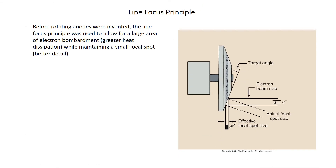The line focus principle is based on the fact that you can have a large actual focal spot, and because of the angle of the anode's face, you can have a smaller effective focal spot. The advantage is that the larger actual focal spot allows for greater heat dissipation, while the smaller effective focal spot gives you better detail. Before rotating anodes were invented, the line focus principle was used to allow for a large area of electron bombardment — greater heat dissipation — while maintaining a small focal spot for better detail.